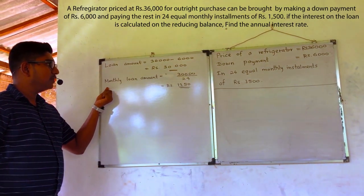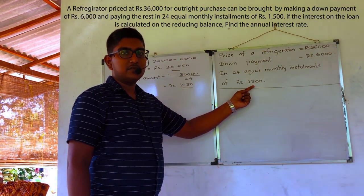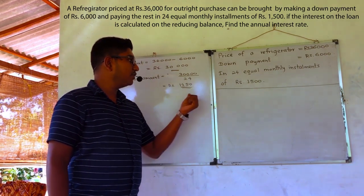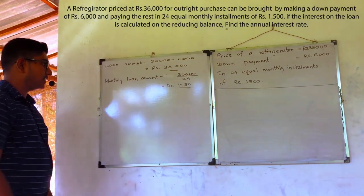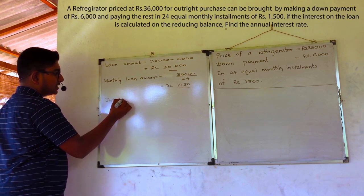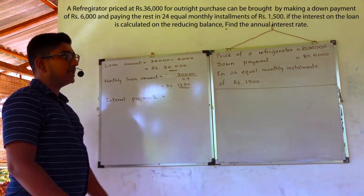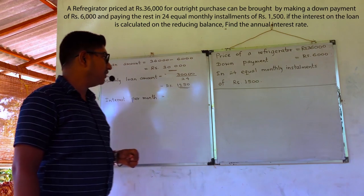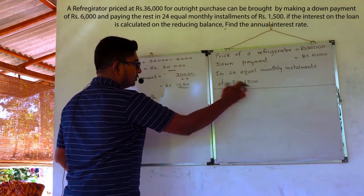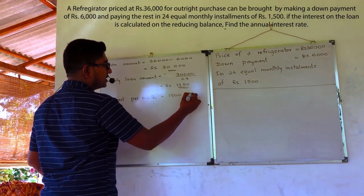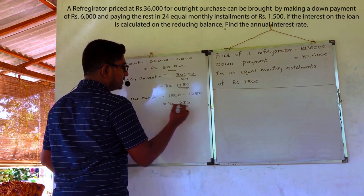The value of the monthly loan amount is 1250, but we have to pay 1500. That means there is a difference of 250 rupees for a monthly installment. That difference is the interest we have to pay — the interest per month. Since the value of a monthly installment is given in this question, there is no need to calculate the interest using EMI. We can directly take the difference: 1500 minus 1250 equals 250. That is the interest.